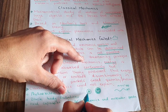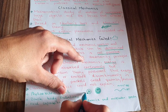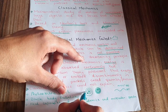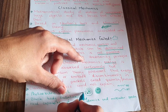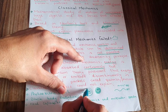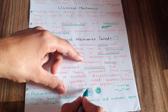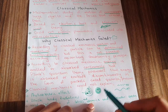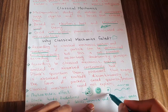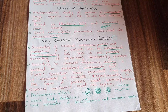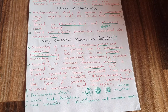If an electron has to jump to a higher energy level, it absorbs a photon with energy equal to the difference between the two energy levels. Similarly, if an electron jumps from a higher to a lower energy level, it releases a photon equal to the energy difference between those orbitals. Energy is not released continuously — it is released in the form of quanta, and similarly absorbed in the form of quanta.